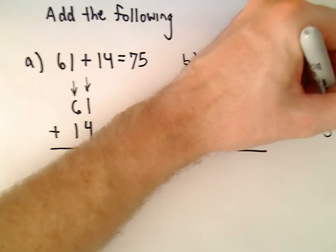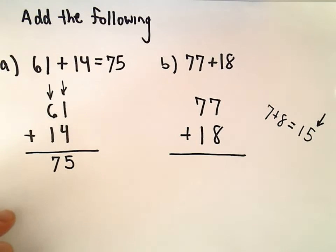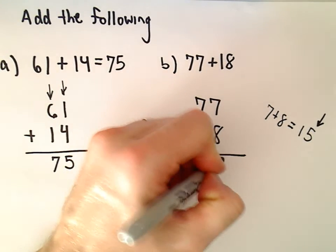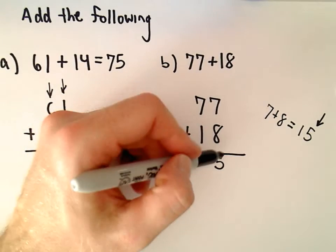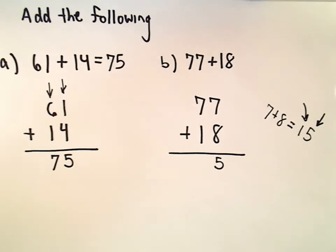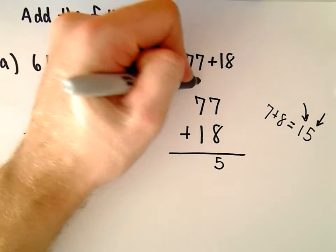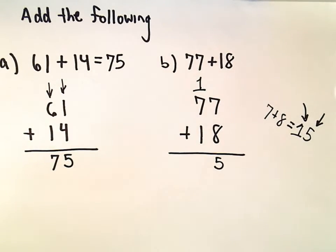So what we're going to do - the 15 has a ones digit of 5. That's the digit we're going to write down, so I'm going to write the ones digit in the ones column. And then our 1 would be our tens digit, so that's what I'm going to carry to the next column.